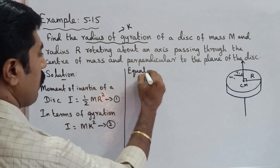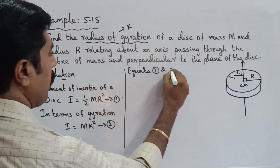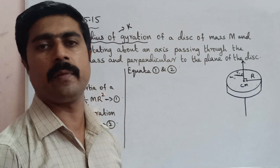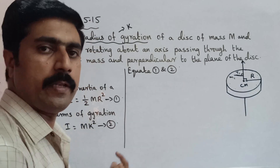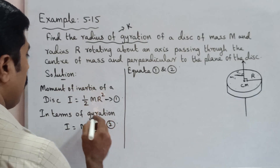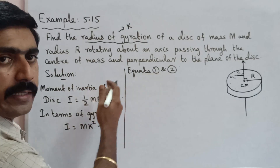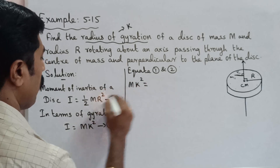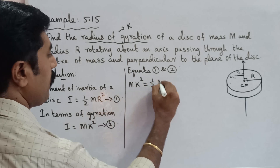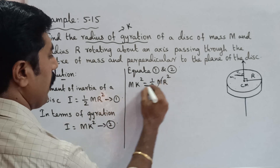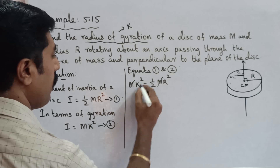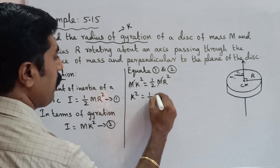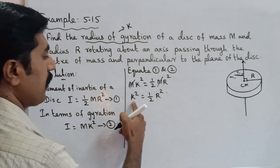Now equate equation 1 and equation 2. Since the left-hand sides are equal, the right-hand sides are also equal. So MK² = (1/2)MR². The M cancels from both sides, giving K² = (1/2)R².